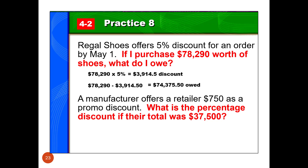In the bottom example, a manufacturer offers a retailer $750 as a promotional discount. What was the actual percent off that they got if they paid $37,500? So we're going to work backwards here. The first thing I'm going to figure out is how much I actually paid. So I'm going to take my original amount, $37,500, and subtract the discount they gave me. So that means I actually paid them $36,750.